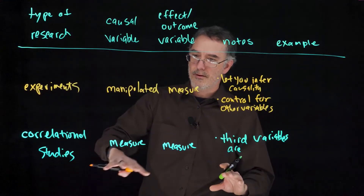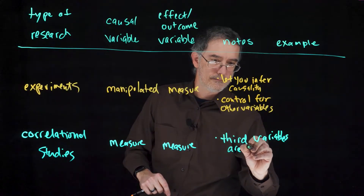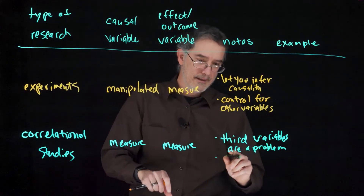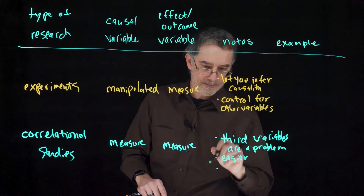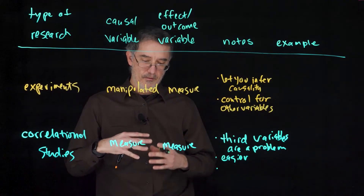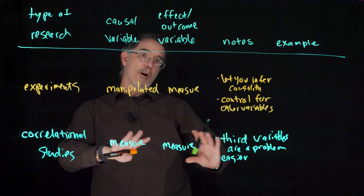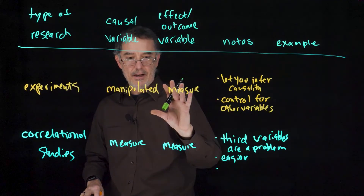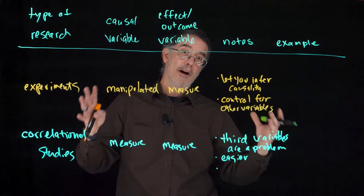These third variables are problems — they are alternative explanations for the correlation between your cause and your effect. Generally, though, correlational studies are a little bit easier to do, which makes them nice. Another nice thing about correlational studies is that if there is a relationship overall between caffeine and tiredness, hopefully when you go out and measure people in the world — measure how much caffeine they have drunk and how tired they are — you would find that relationship there.